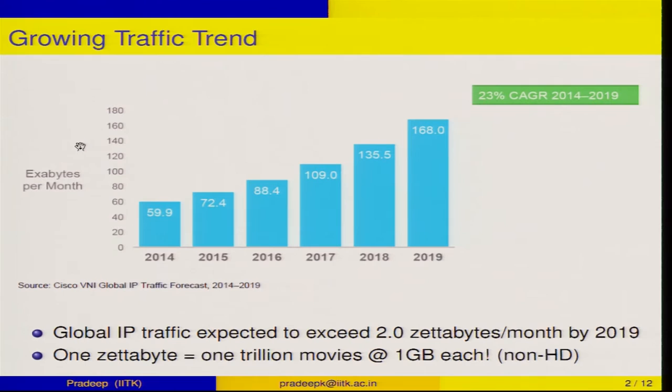If you look at the growing traffic trend as estimated by Cisco networks in the year 2014, you would see that the traffic has been increasing quite a bit and it is expected to exceed 2 zettabytes per month by the year 2019. This report on traffic trend was given by Cisco in the last couple of years and it shows that the traffic is expected to exceed 2 zettabytes.